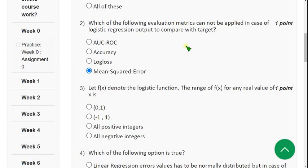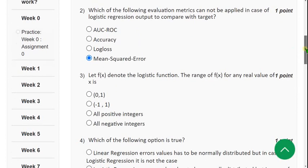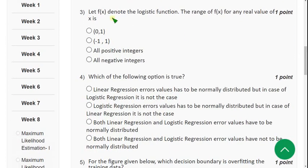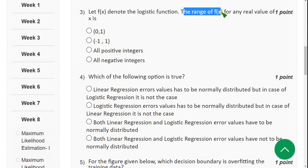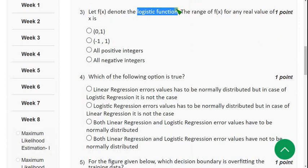Moving on to the third question. Let f(x) denote the logistic function. The range of f(x) for any real value of x is? Generally f(x), the range of a logistic function will always be between 0 and 1. So mark option 1.